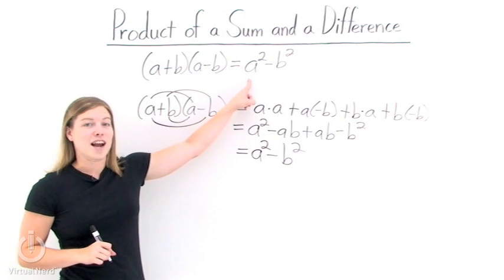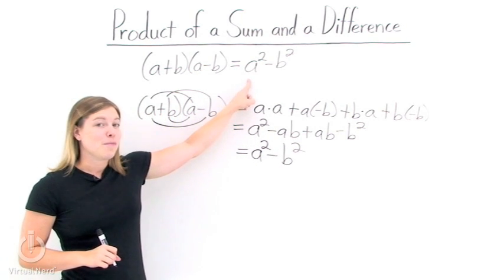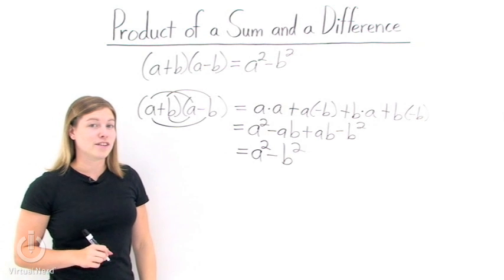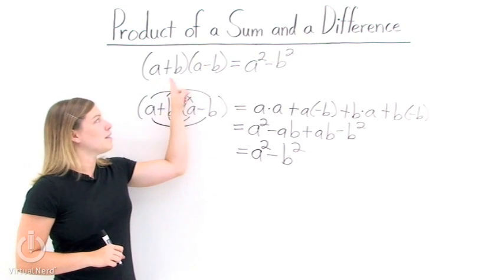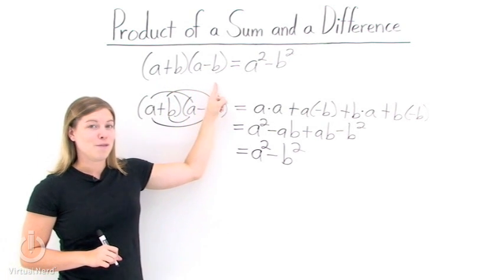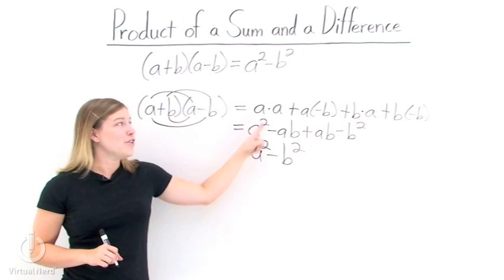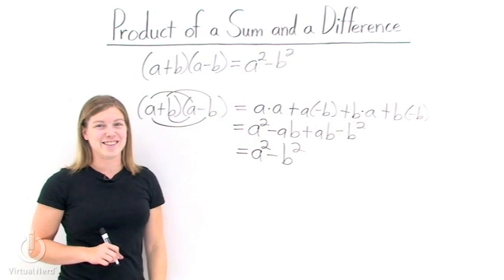This is the right-hand side of our formula. So, if you're trying to take the product of a sum and a difference, like a plus b times a minus b, rather than FOILing, all you need to do is use this formula to get your answer.